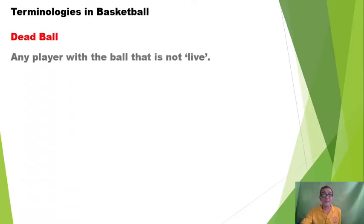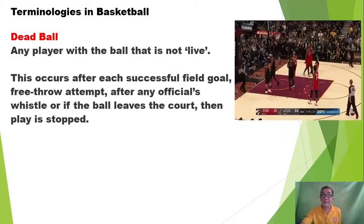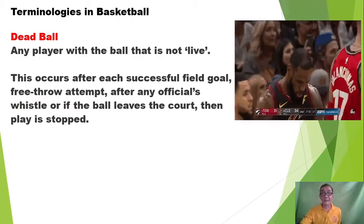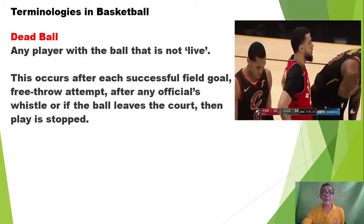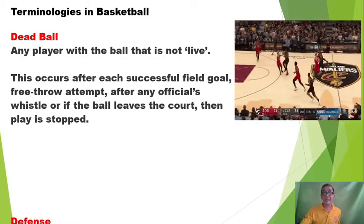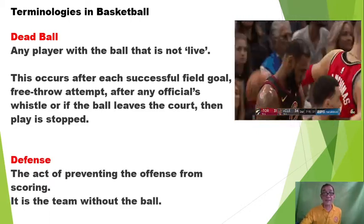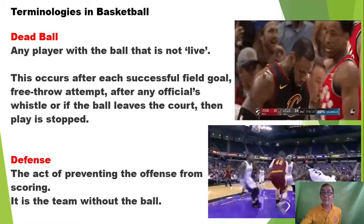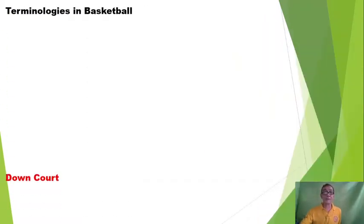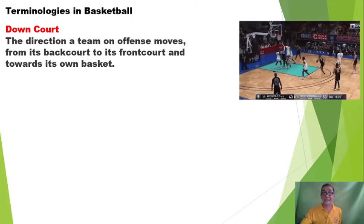The next one is the dead ball — any ball that is not live and is secured after a successful field goal, free throw attempt, after any official's whistle, or if the ball leaves the court, then play stops. How about the defense? It is the act of preventing the offense from scoring — it is the team without the ball. And then down court — the direction a team on offense moves from its backcourt to its frontcourt and towards its own basket.